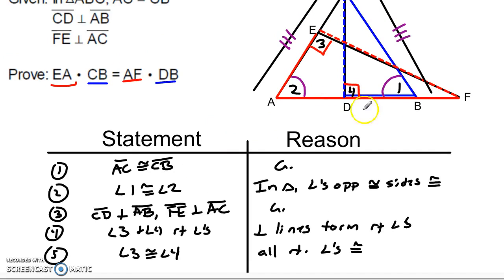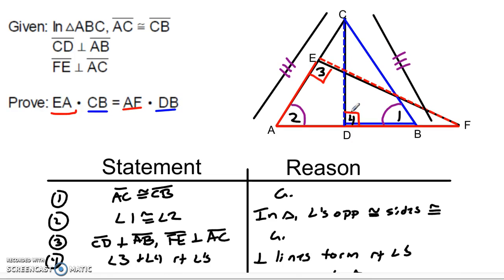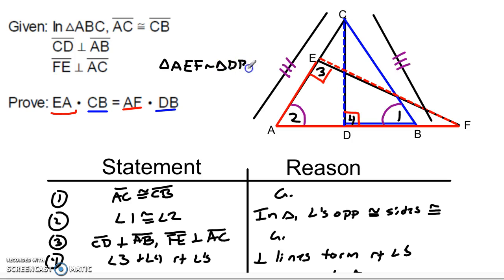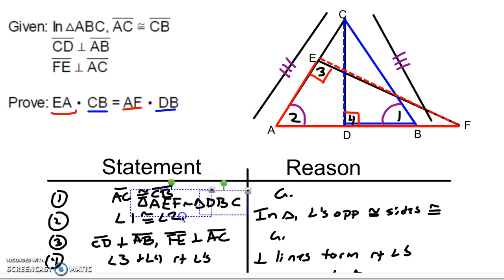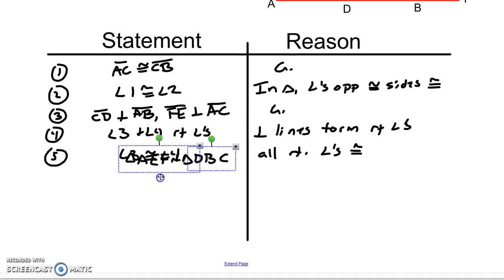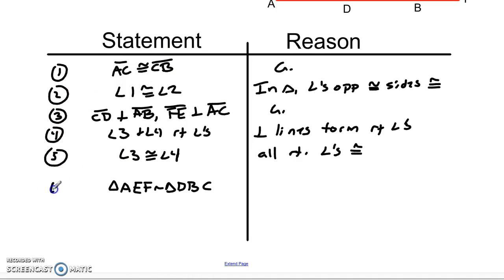So with our two pairs of angles congruent, now we're ready to write the statement about the triangles. I want to keep the order together. If I call the first triangle triangle AEF — going from A to E to F, that's the one-tick angle to the right angle to the unmarked angle — then in the blue triangle I have to do the same thing: one-tick to the right to the unmarked, that would be D, B, C. So it's going to be triangle AEF similar to triangle DBC. That is, of course, angle-angle triangle similarity. That would be step 6.